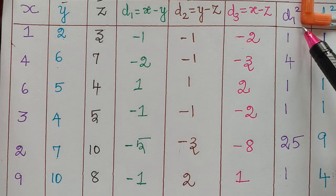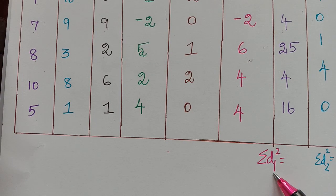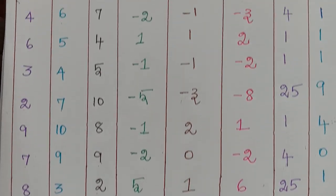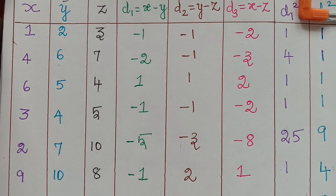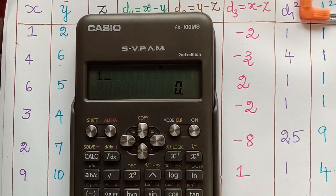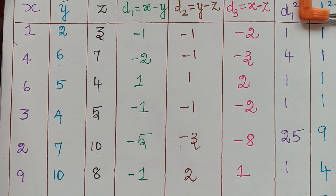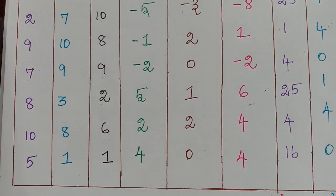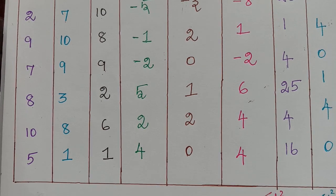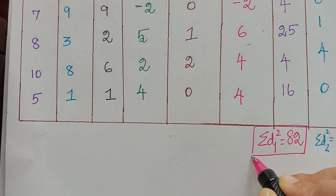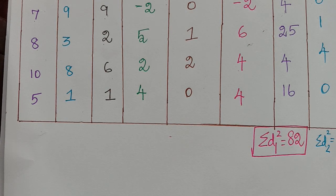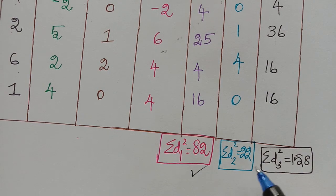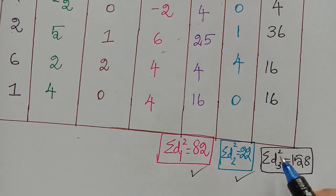Now we sum up all the squared values. Adding the d1 squared values: 1+4+1+1+25+1+4+25+4+16 = 82. So summation d1 squared equals 82. Similarly, summation d2 squared equals 22, and summation d3 squared equals 158.